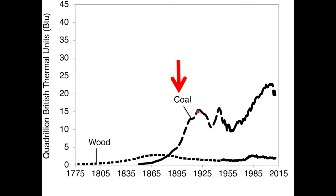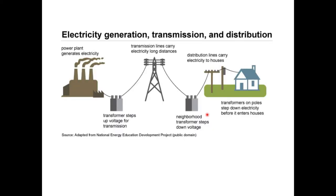I showed you in the previous lecture the tremendous growth in our consumption of coal starting in the mid-19th century around 1850–1860, and then in the 1870s–1880s as Edison and others started building coal-fired power plants. Then there was that famous game-changer where President Grover Cleveland flipped the switch at the 1893 Chicago Exposition. Once people saw what electricity afforded them, everyone in the United States and the developed world wanted electricity, and coal consumption increased as a result.